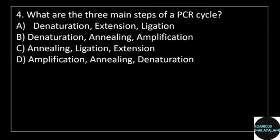4th question. What are the 3 main steps of a PCR cycle? Answer options. Option A: Denaturation, Extension, Ligation. Option B: Denaturation, Annealing, Amplification.